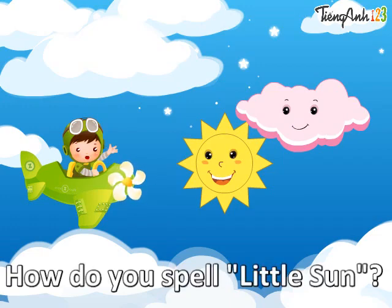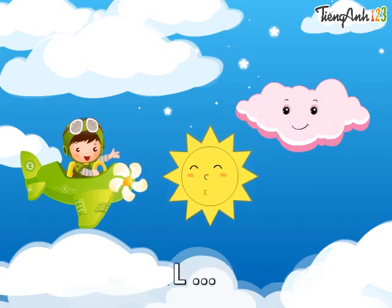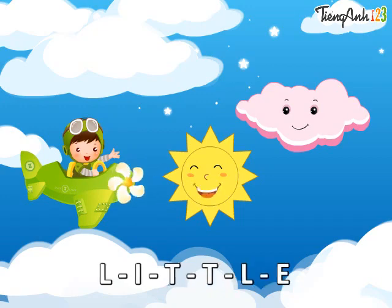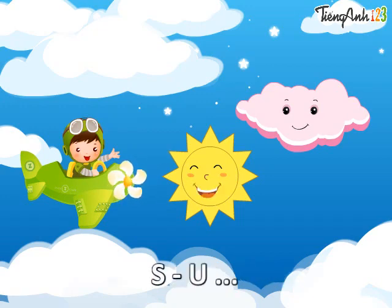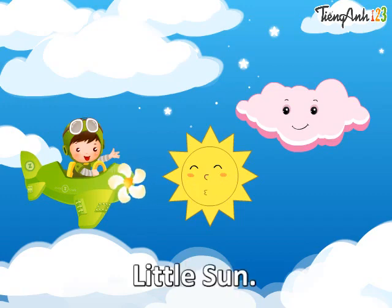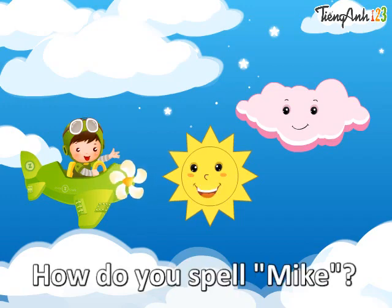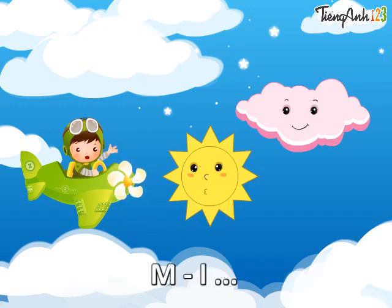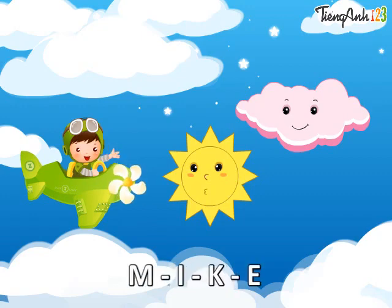How do you spell Little Sun? L-I-T-T-L-E S-U-N. Little Sun. How do you spell Mike? M-I-K-E. Mike.